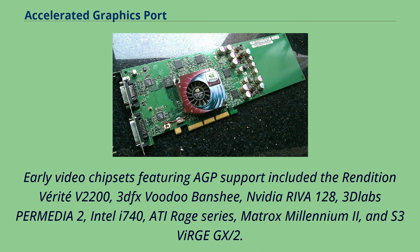Early video chipsets featuring AGP support included the Rendition Verite V2200, 3DFX Voodoo Banshee, NVIDIA RIVA 128, 3DLabs Permedia 2, Intel i740, ATI Rage Series, Matrox Millennium 2, and S3 ViRGE GX2.